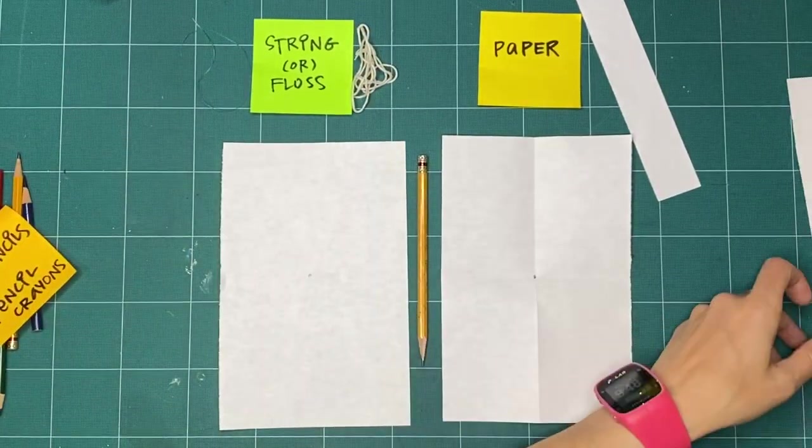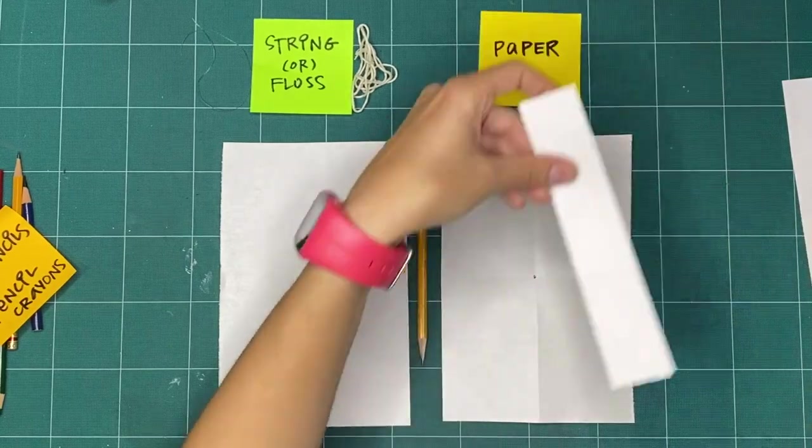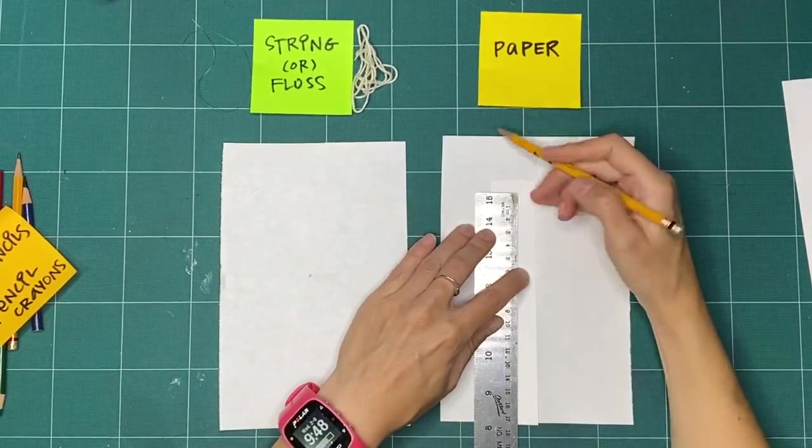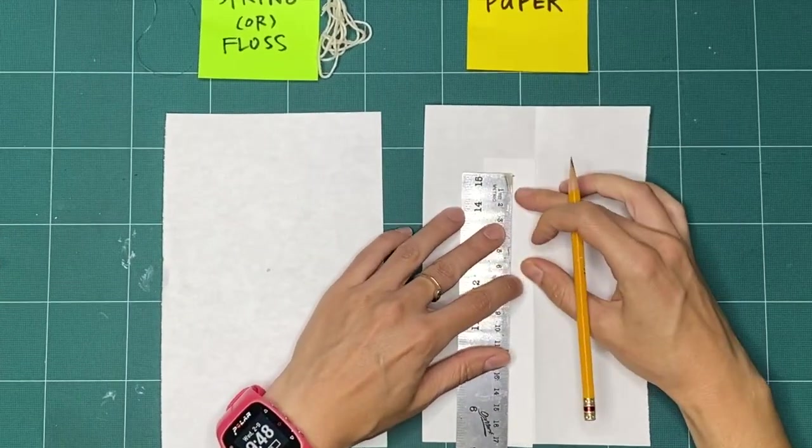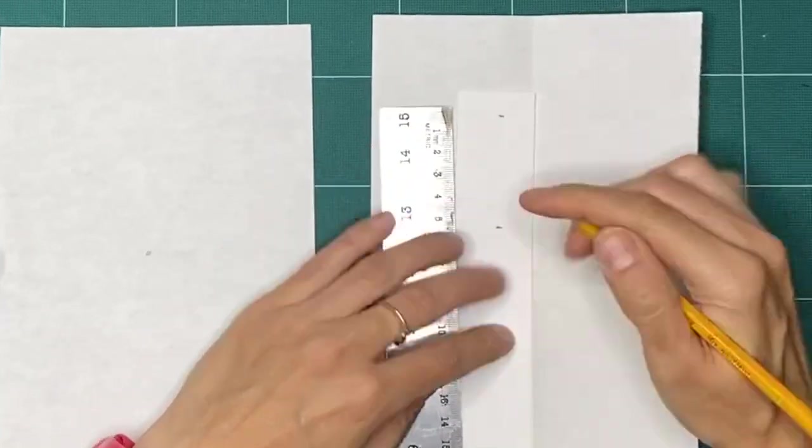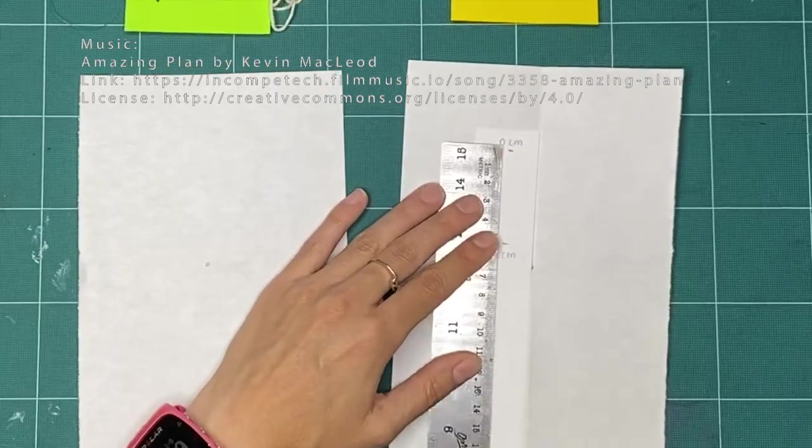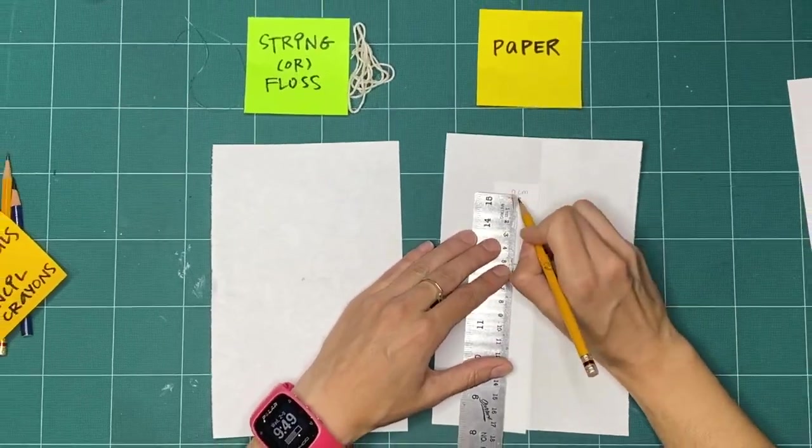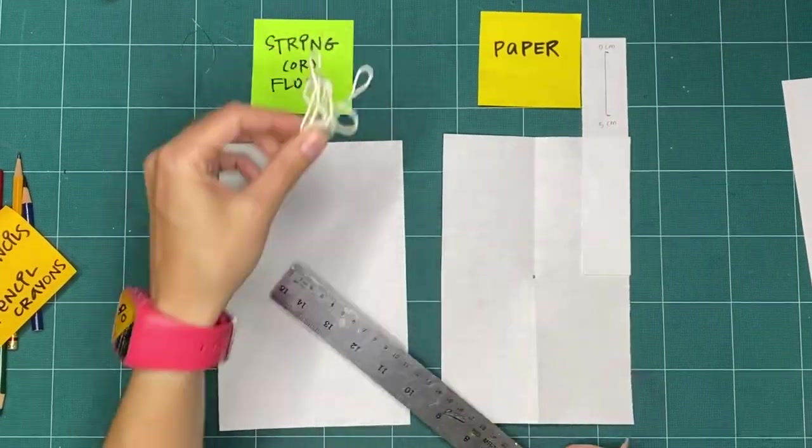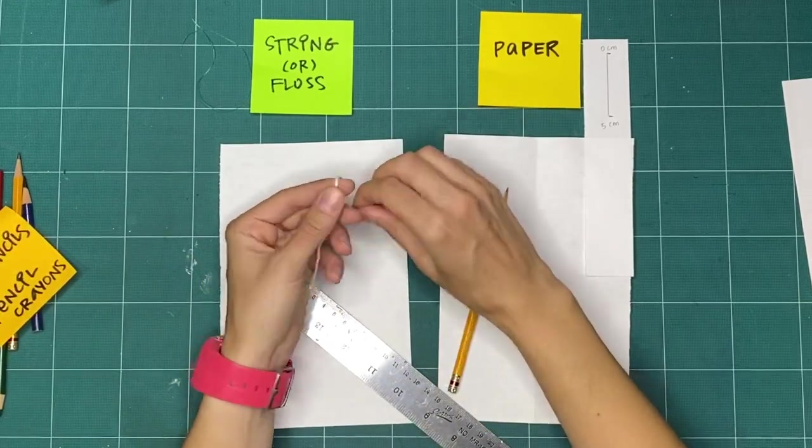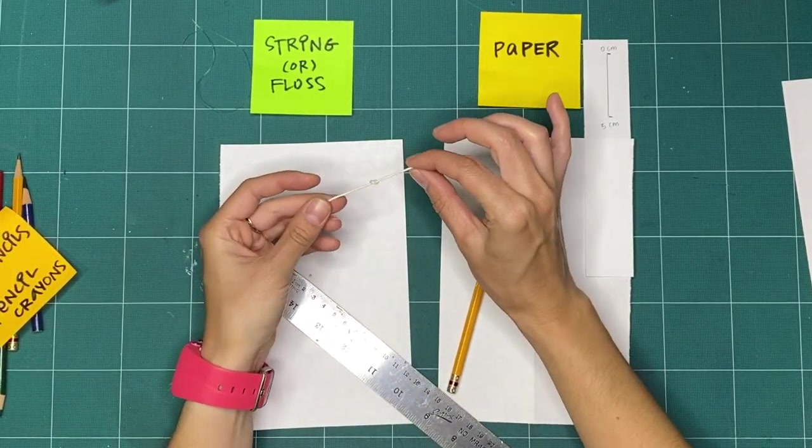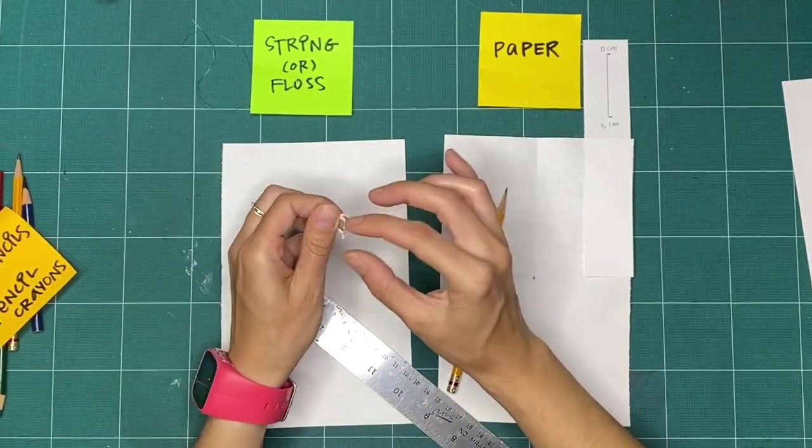The first thing we need to do is make a measurement. Let's measure five centimeters on a piece of paper. I will mark the zero and the five centimeter points. If you're using string or floss, mark the zero by making a knot on one end and then marking five centimeters with your pencil.